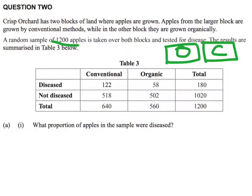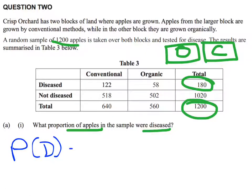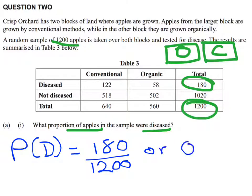The question asks: what proportion of apples in the sample were diseased? We're interested in all of the apples — there are 1200 in total — and there are 180 diseased apples in total. So we can say the probability of diseased apples is equal to 180 over 1200, or written as a decimal, 0.15. And that's your answer.